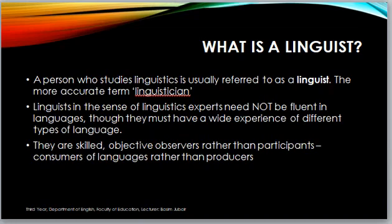Linguisticians or linguists are skilled, objective observers — not subjective. Objective means studying scientifically. They are observers rather than participants or consumers of languages. They do not speak these languages; they do not consume them. They are observers and describers of these languages.